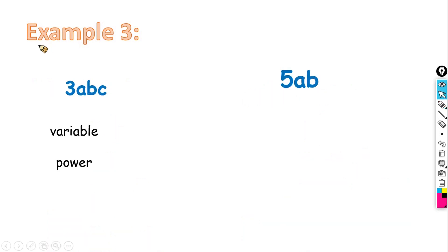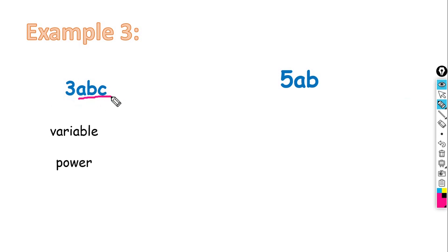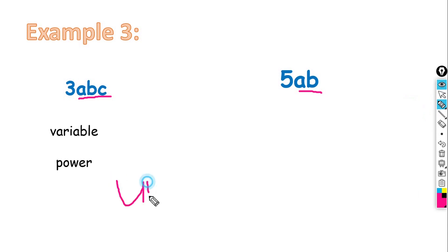Let's look at Example 3. The first term is 3ABC and the second term is 5AB. The first term has the variables A, B, and C, but the second term only has variables A and B. Since the variables are not the same, we can conclude these are unlike terms.